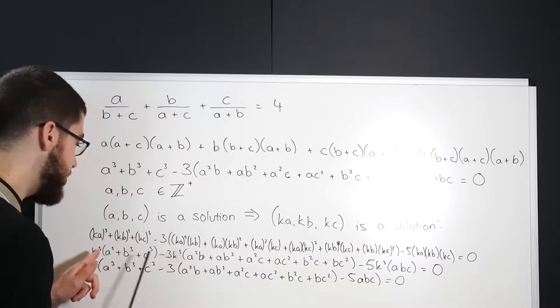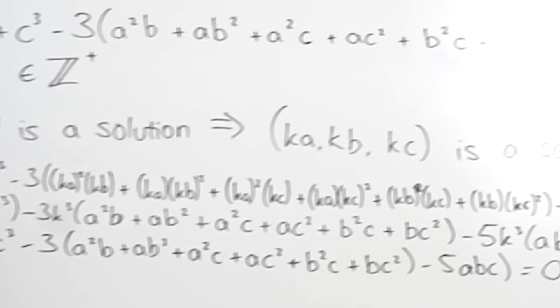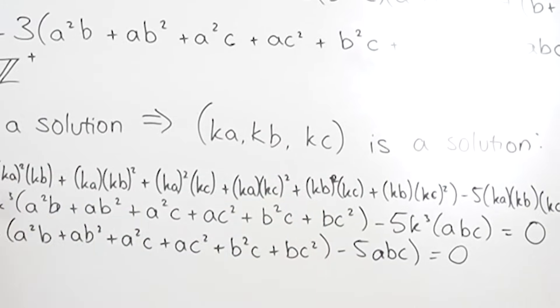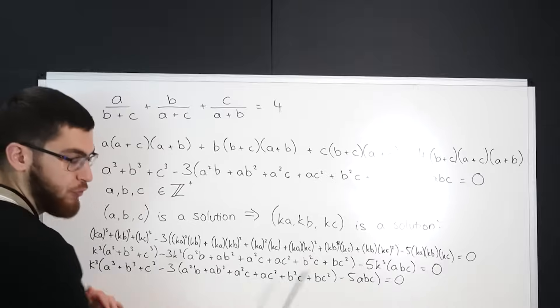Because if we plug in K*A, K*B, and K*C into the equation then we can factor out the K cubed and if this is equal to 0, which we know because A, B, C is a solution, then the whole thing must be equal to 0.